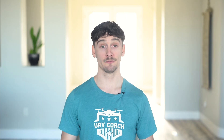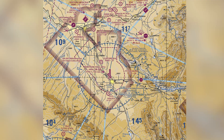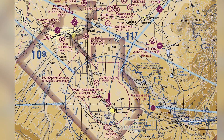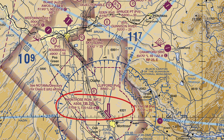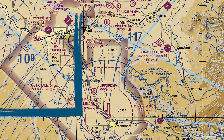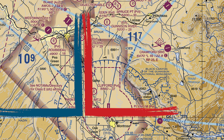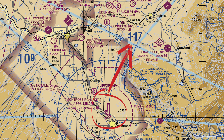When reviewing a question that references a sectional chart, don't just look at the immediate detail like a tower or an airport. Take a step back and study the entire chart. Look for surrounding airspace, landmarks, or special use airspace that might provide context for the answer. This will help you get comfortable looking at different sectional charts instead of just memorizing specific ones.